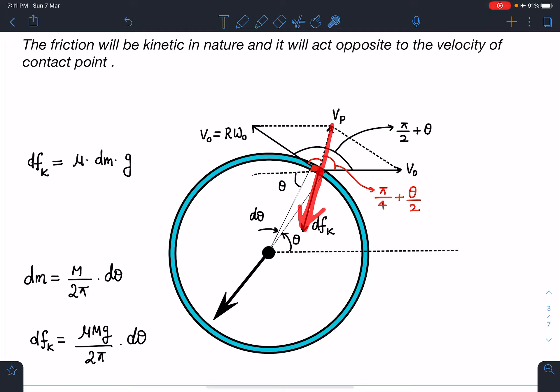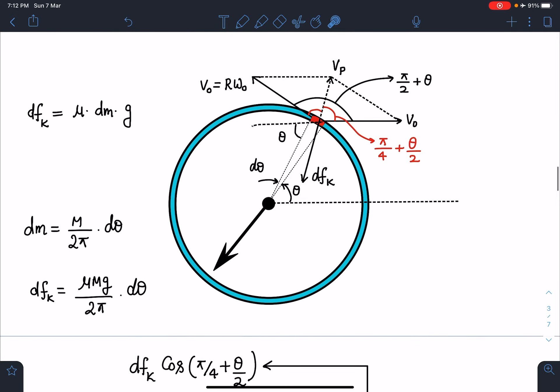I can easily say dfₖ is nothing but μ into normal reaction, where normal reaction will be the weight of that element, which is dmg. So μ dmg, and dm I can write as M/(2π) into dθ. So the magnitude of dfₖ is μMg/(2π) dθ, but its direction keeps changing.